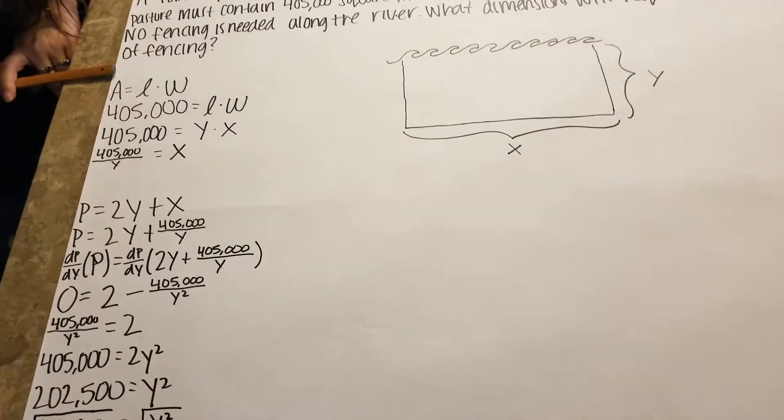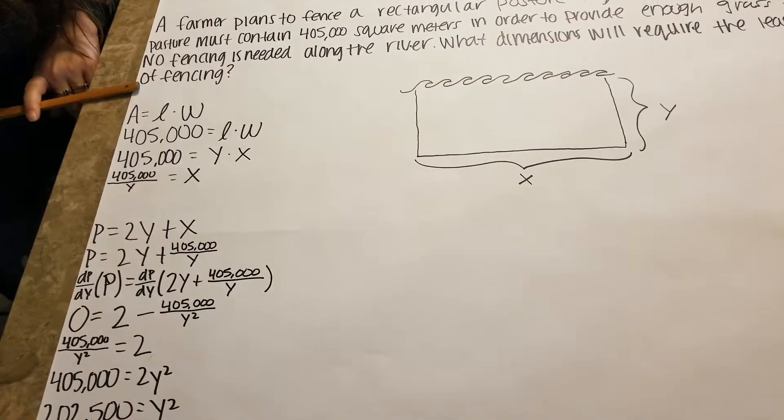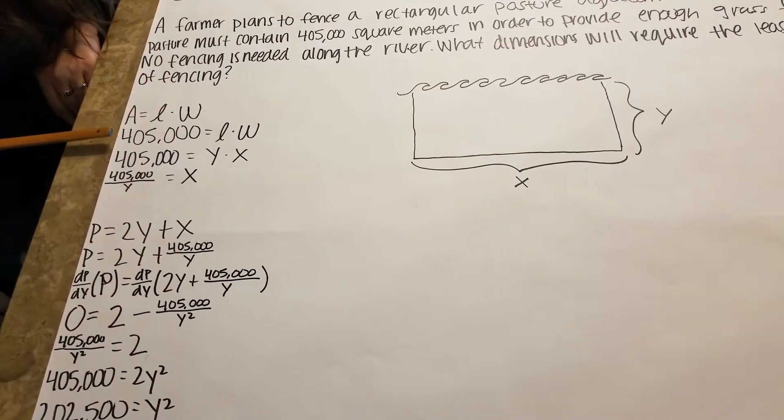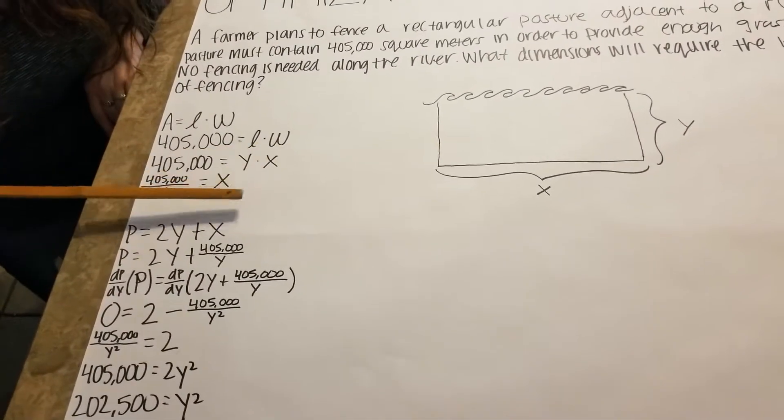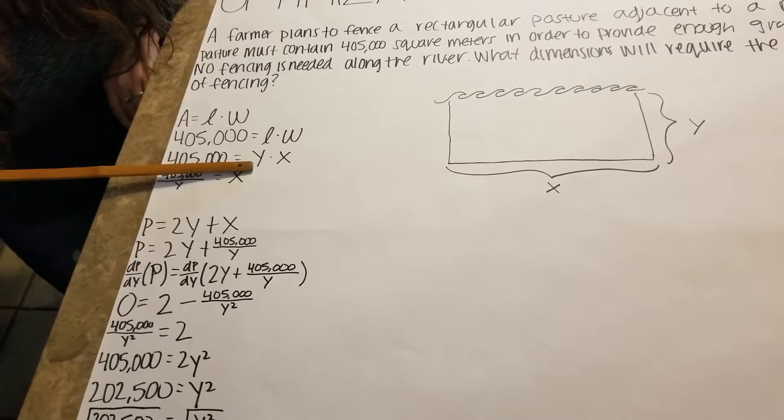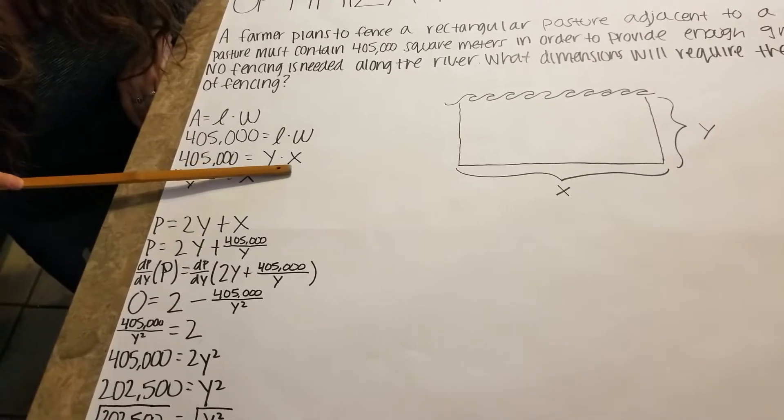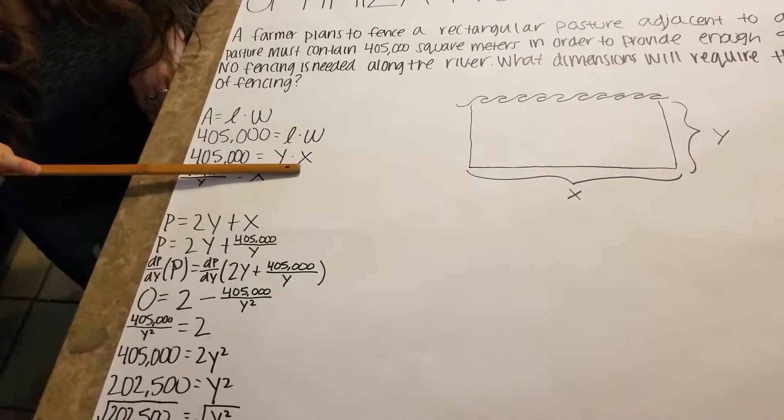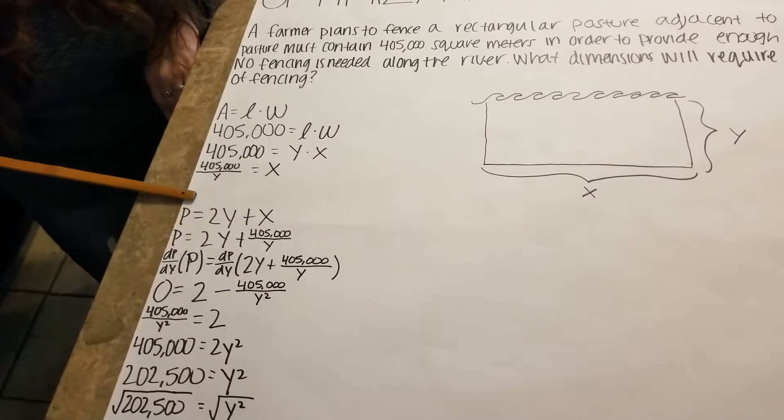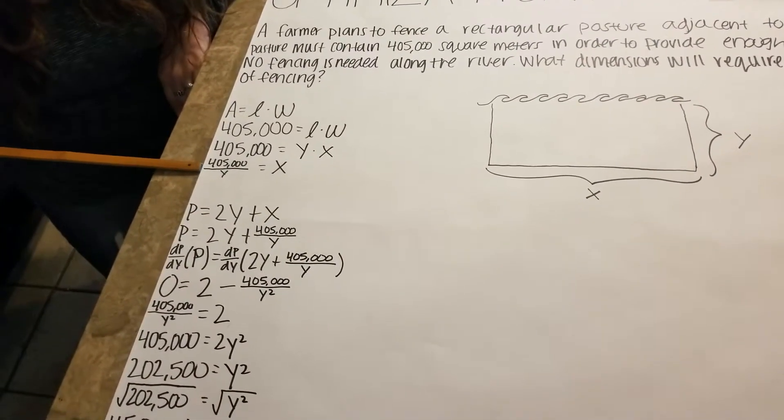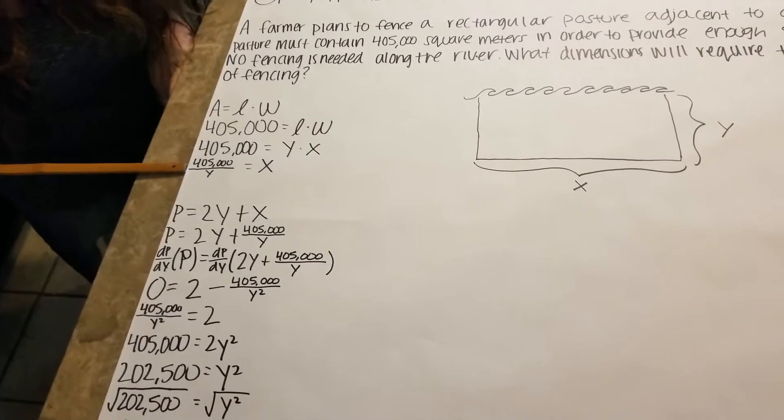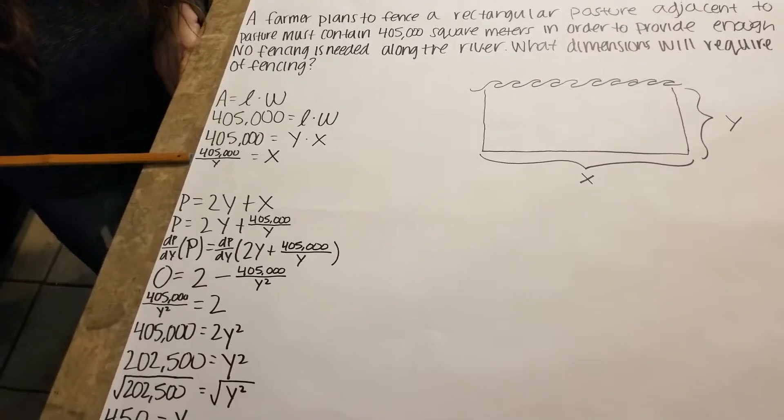Area is length times width. Our area for this problem is 405,000 equals length times width. Length in this case is indicated by Y shown in the picture, and width is indicated by X also shown in the picture. When we manipulate this we get 405,000 over Y equals X. We're doing this in order to get like variables for the next part.